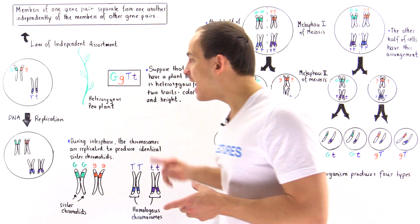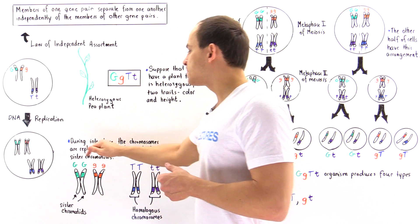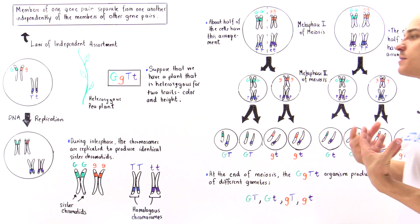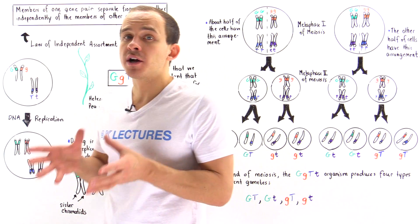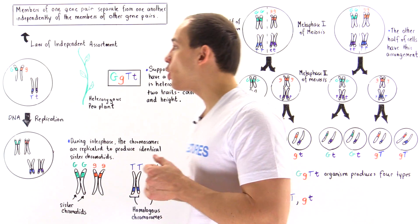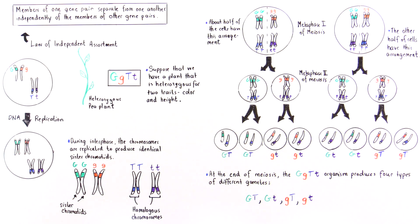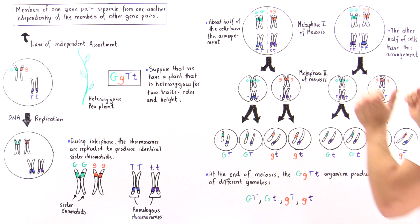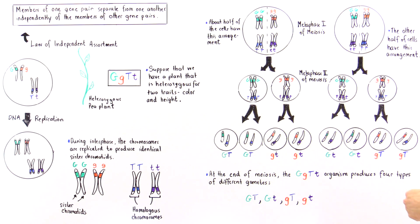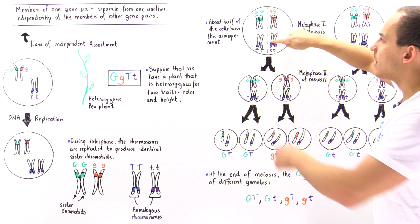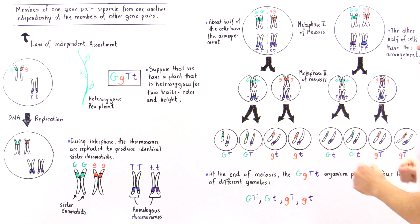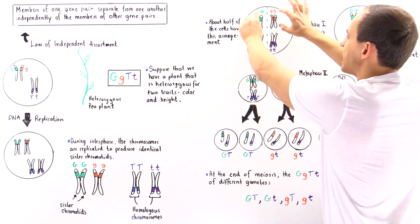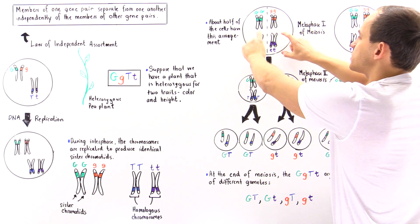This is what we have following DNA replication during interphase, before meiosis actually begins. Now let's suppose meiosis has begun and we're at metaphase I. During metaphase I, these homologous pairs of chromosomes arrange themselves along the equator of the cell — one homologous pair on one side and the other homologous pair aligned accordingly.